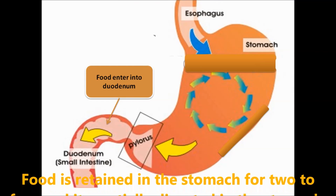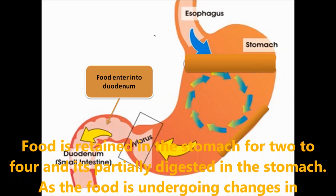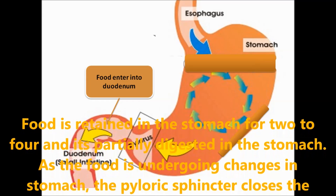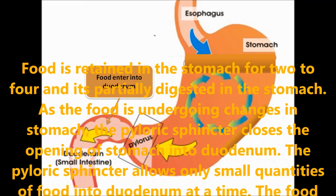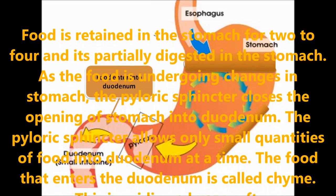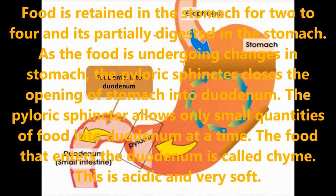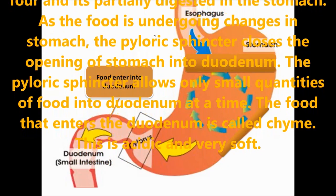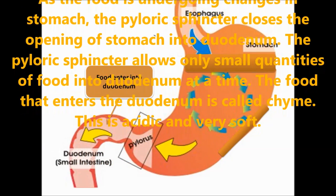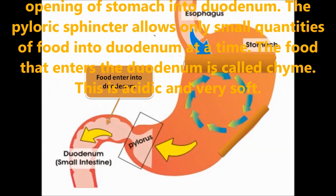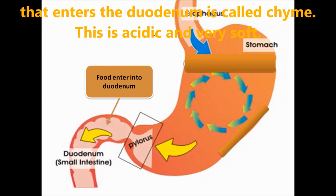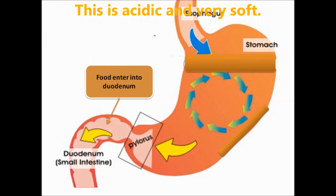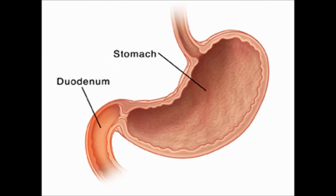The food is retained in the stomach for two to four hours and is partially digested. As the food undergoes changes in the stomach, the pyloric sphincter closes the opening of the stomach into the duodenum and allows only small quantities of food into the duodenum at a time. The food that enters the duodenum is called chyme, which is acidic and very soft in nature.